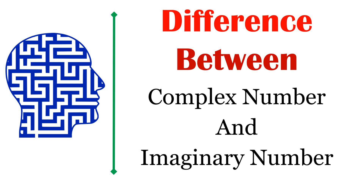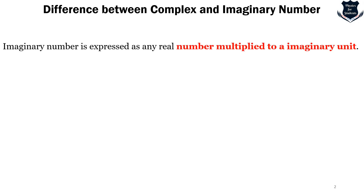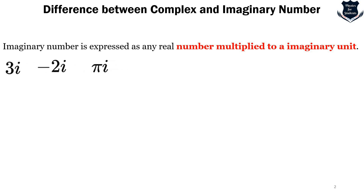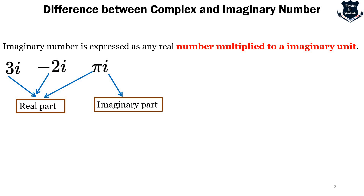The difference between complex and imaginary is that an imaginary number is expressed as any real number multiplied by an imaginary unit i. For example, 3i, minus 2i, or pi·i — in all these, the coefficient is the real part and i is the imaginary unit. So an imaginary number is a real number multiplied by the imaginary unit i.